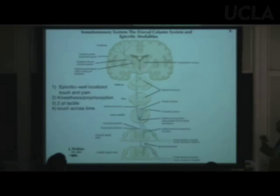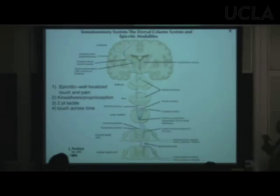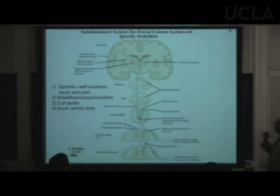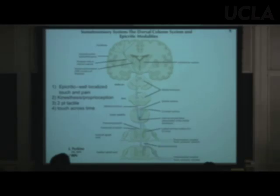The VPL is in the thalamus, so it's in the diencephalon. Cell bodies of the VPL send their axons up to the cortex via the posterior limb of the internal capsule. These axons finally synapse in the postcentral gyrus of the parietal lobe.